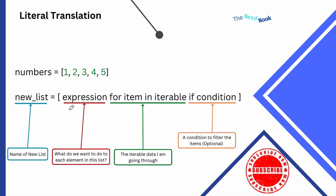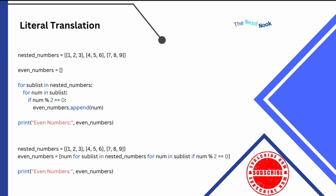We first begin with our expression, then we have the iterable data we want to go through, and then optionally at the end we have a condition — a filter applied to each item we're going through. This is what we put inside our new list, or this comprehension.